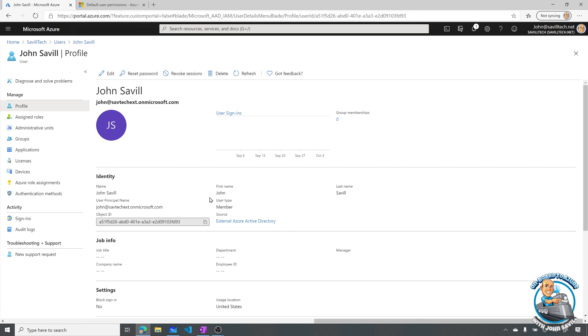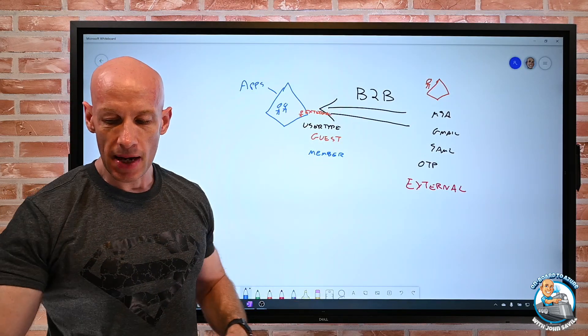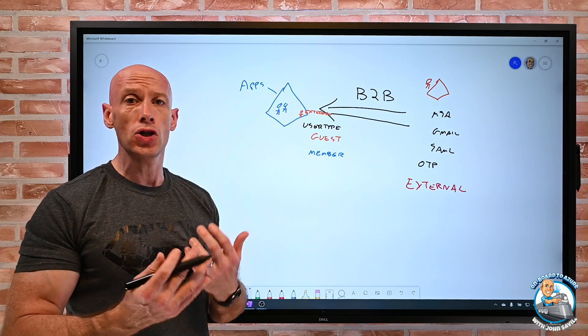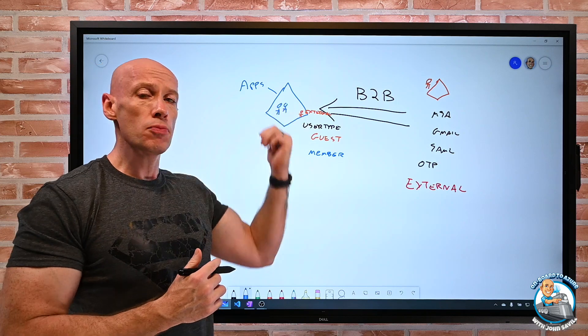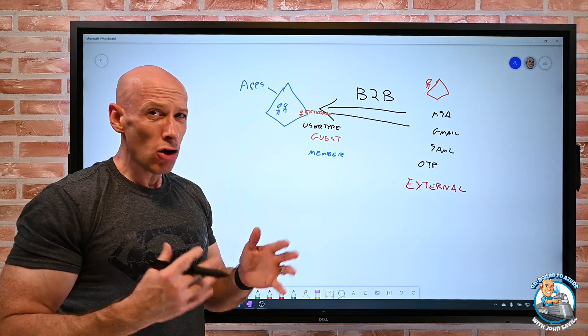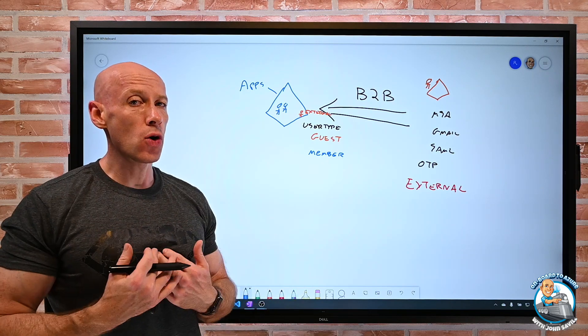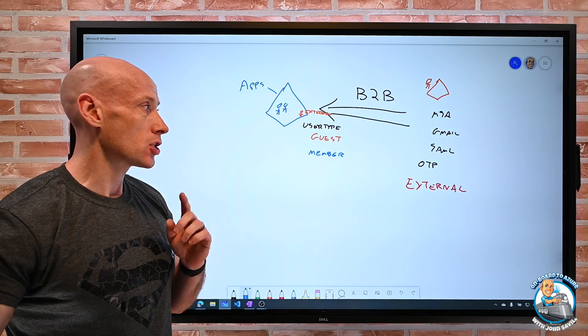The reason I might change that would be something like hey I've got this relationship with another company. Maybe it's an acquisition. Maybe we've merged together. So I've added their accounts into my Azure AD as an external source. But they're not really guests. They are part of my organization. And I want them to be treated as members. So I can change the type.